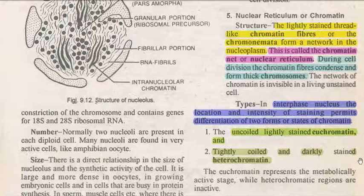Chromatin is composed of DNA strands and histone proteins. During cell division, chromatin fibers condense and they form into a higher order structure called chromosomes.